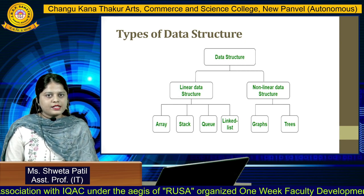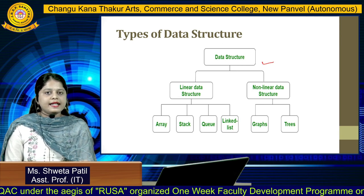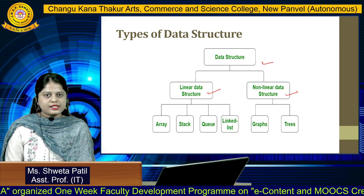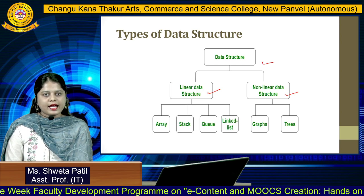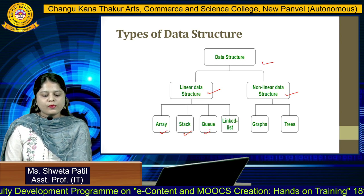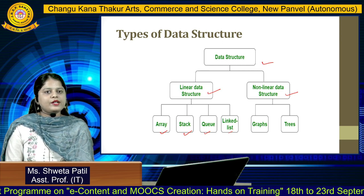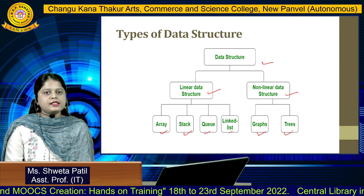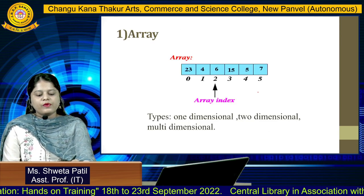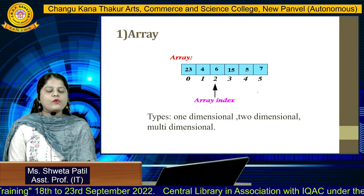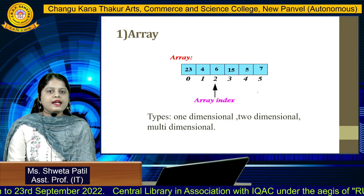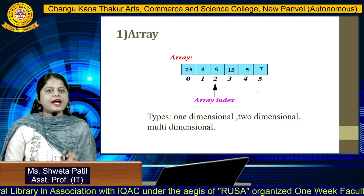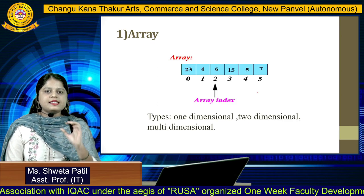These are the types of data structure. As you can see in the diagram, data structures are broadly categorized into linear and non-linear. Under linear, there are four types: array, stack, queue, and linked list. Under non-linear, there are two types: graph and tree. The first type is array. Array is a collection of homogeneous — that is, similar — kind of data.